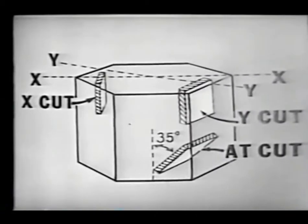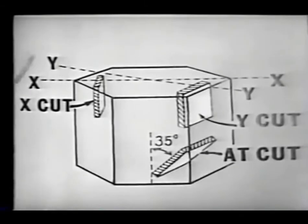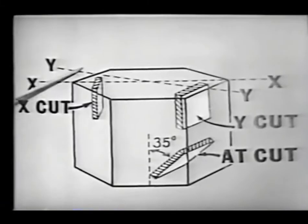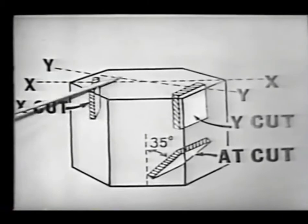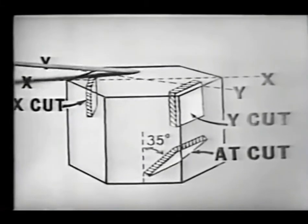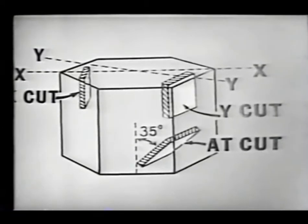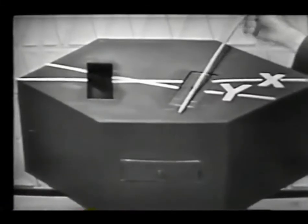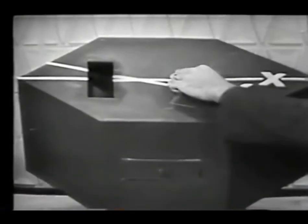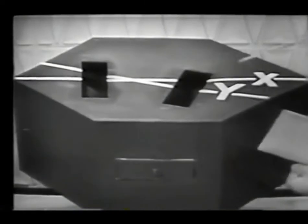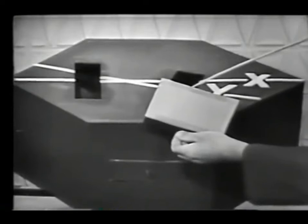For the second cut, we will use the Y-axis, which passed through the face of the crystal. This cut will be taken perpendicular to the Y-axis and it also is parallel to the Z-axis, which runs through the center of the crystal. Since we took it in reference to the Y-axis, it would be known as a Y-cut crystal.